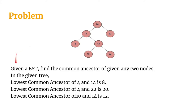The problem statement is: given a binary search tree, find the lowest common ancestor of any two given nodes. For example, if we are given nodes 14 and 4, the common ancestor will be 8. It basically means we have to find the common parent of both nodes. 4 has 8 as its parent, and 14 also has 8 as its parent via node 12. So 8 is the common ancestor of 4 and 14.